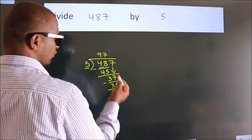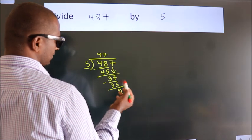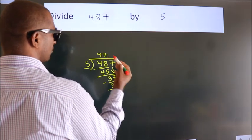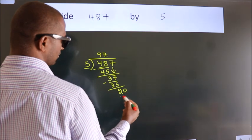After this, no more numbers to bring down. So what we do is put a dot, take 0. So, 20.